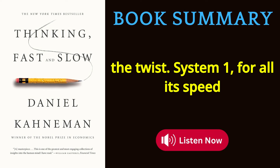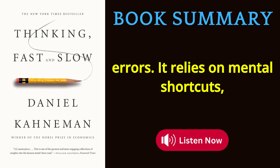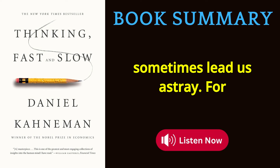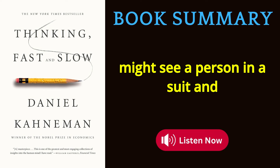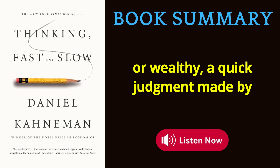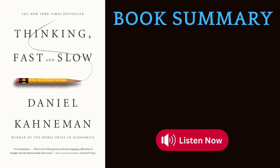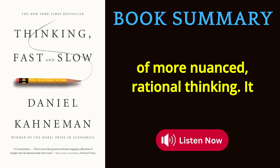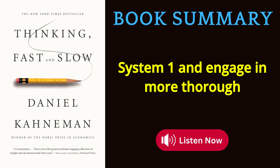But here's the twist: System 1, for all its speed and efficiency, is prone to biases and errors. It relies on mental shortcuts — heuristics — that, while often useful, can sometimes lead us astray. For instance, you might see a person in a suit and automatically assume they're successful or wealthy — a quick judgment made by System 1 based on limited information. System 2, on the other hand, is capable of more nuanced, rational thinking. It can question the assumptions made by System 1 and engage in more thorough analysis.